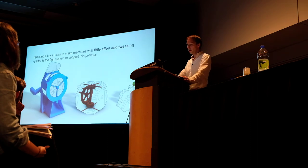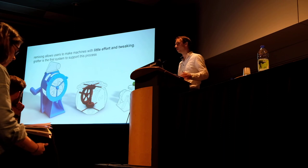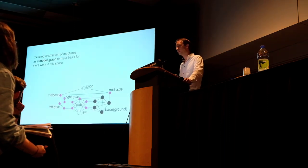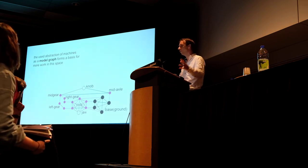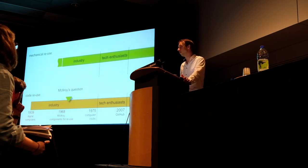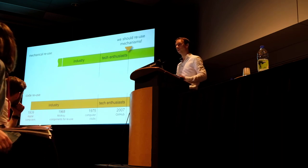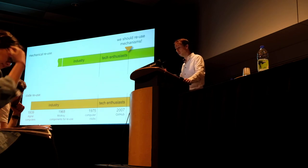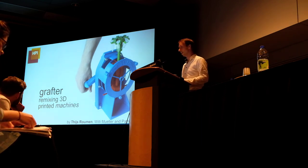In conclusion, remixing allows users to make machines with little effort in tweaking, and Grafter is the first system to support this process. The abstraction of machines as a model graph forms a basis for more work — it's a relatively easy way to capture the functionality of a machine in a lightweight data structure that can be used for all kinds of models. To come back to McIlroy's question from the late 60s about what would be the right thing to reuse: we think, as long as it's about making functional machines, we should be reusing mechanisms. We developed Grafter as a software system to support this process. Thank you for your attention.